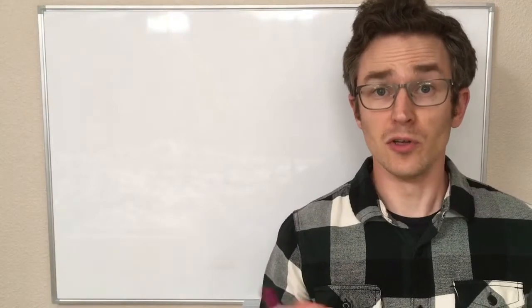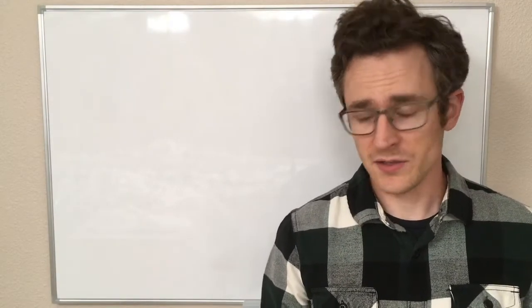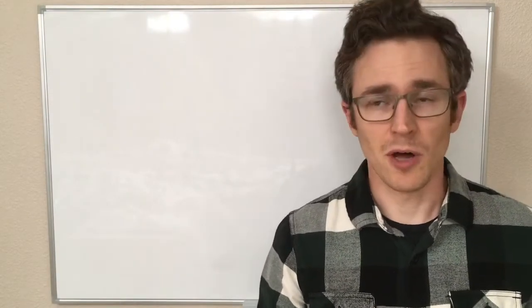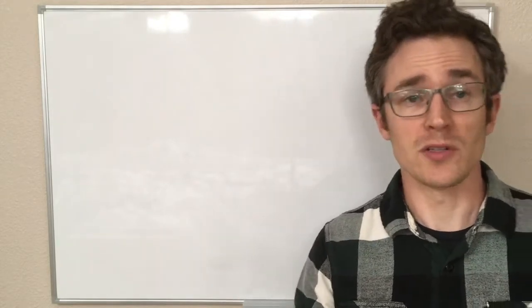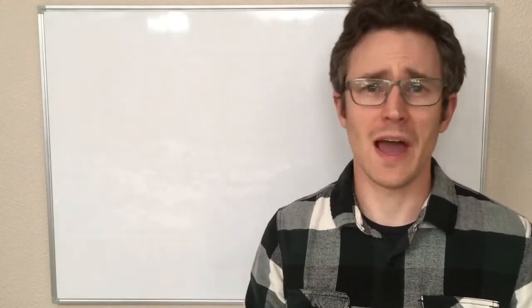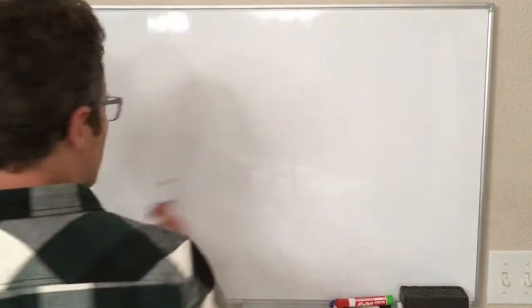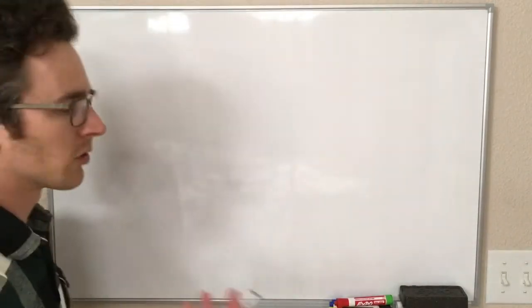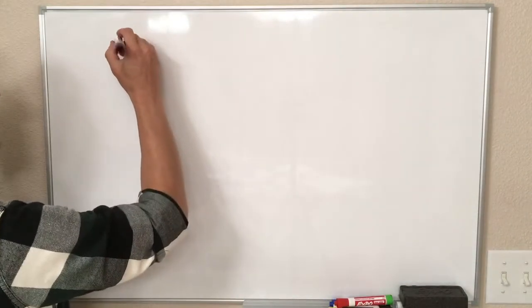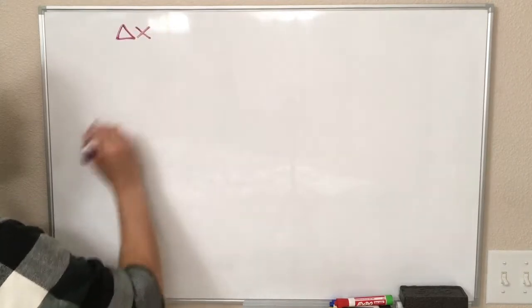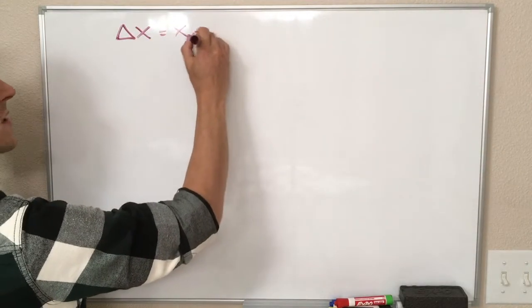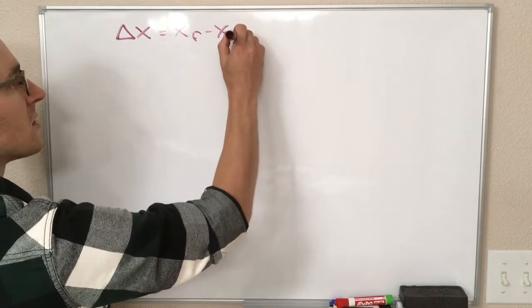So now we've pretty much finished all of the new material in 1D kinematics. To sum up, I'd like to just write down all the equations that we've gathered along the way. There are a few others, but these are the core equations. So the first is our definition of displacement, delta x equals x-final minus x-initial.